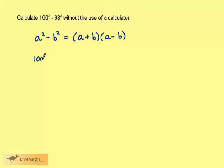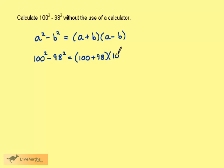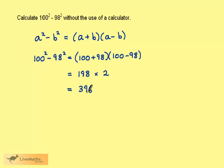So, 100 squared take away 98 squared is going to be 100 plus 98, times 100 take away 98. This is equal to 198 times 2, which is 396.